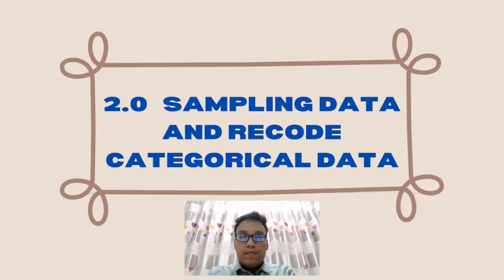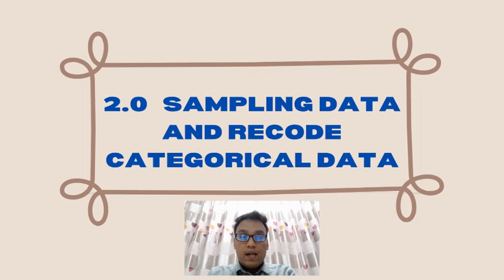Assalamualaikum. My name is Muhammad Zulkifli bin Sudirman and my metric number is A21A2597. For 2.0, which is sampling data and recorded data, table 1 shows that first and last 10 observations were chosen at random from 156 in the dataset in SPSS.